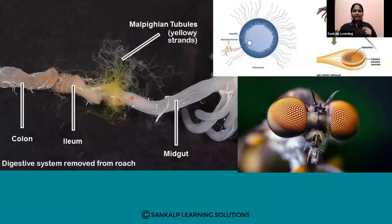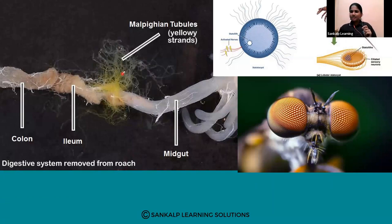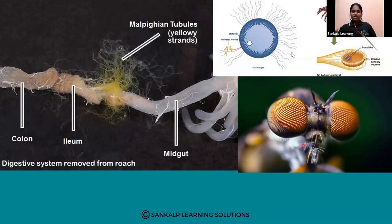Looking at the image, you can see the Malpighian tubules and the alimentary canal. In the lobster image, the statocyst is visible. You can also see how compound eyes look. This covers the general characteristics of Arthropoda.